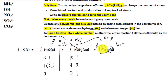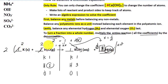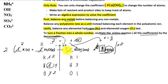We have a fraction, so we multiply the entire reaction — all the coefficients — by the denominator, which is 2. The coefficients become 2, 2, 2, and 1. Recounting: potassium is 2, hydrogen on the reactant side is 2 times 2 = 4, and on the product side is 2 + 2 = 4. Oxygen is 2 times 1 = 2 on both sides. Everything is balanced.